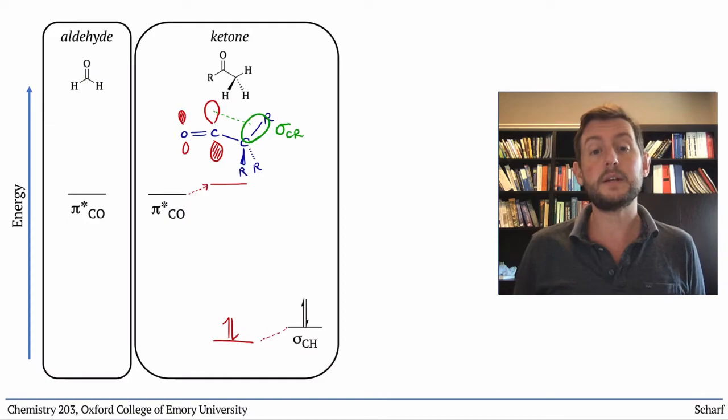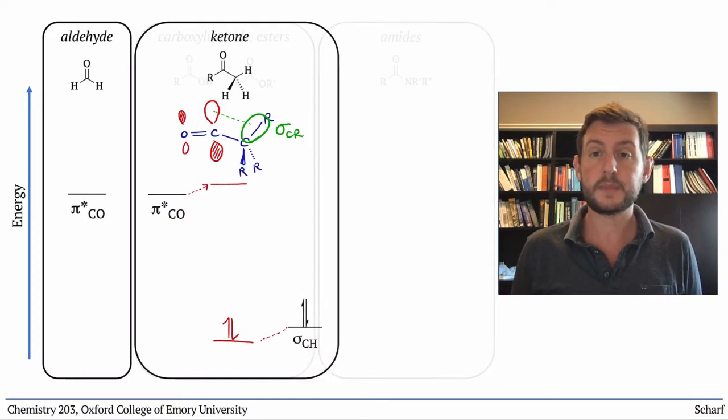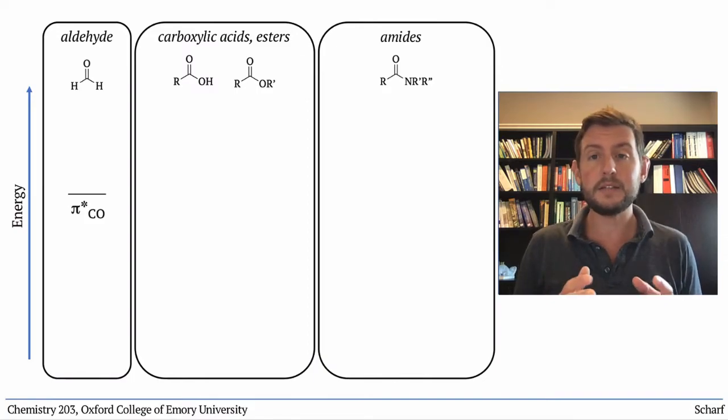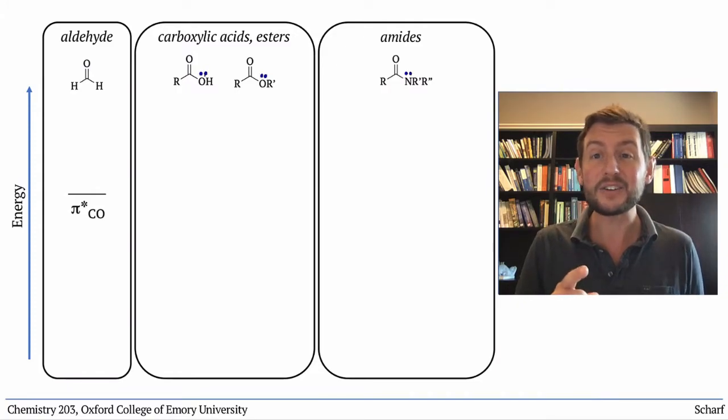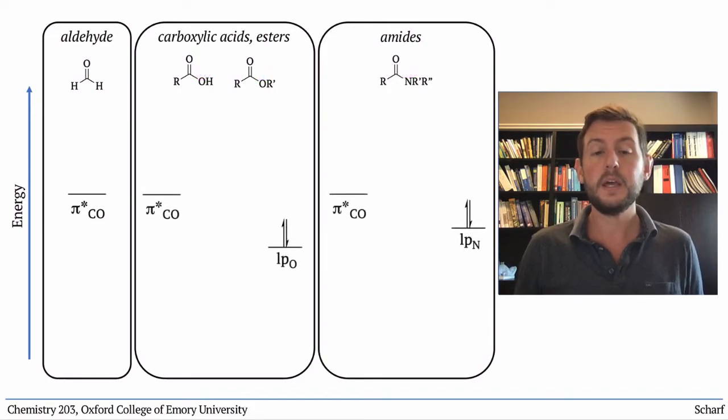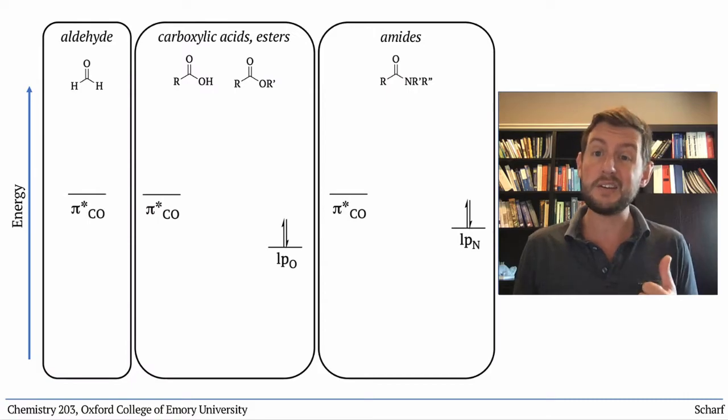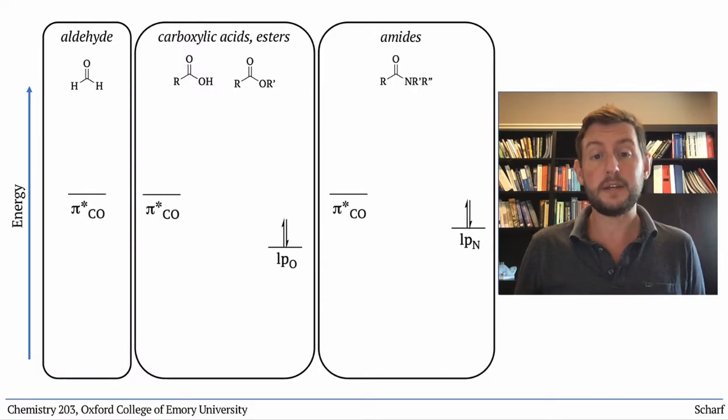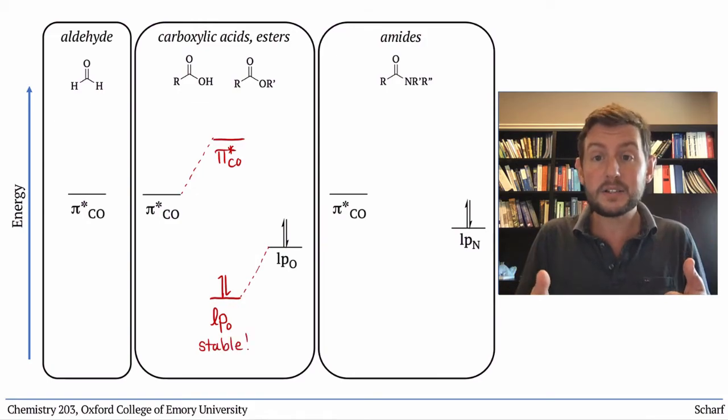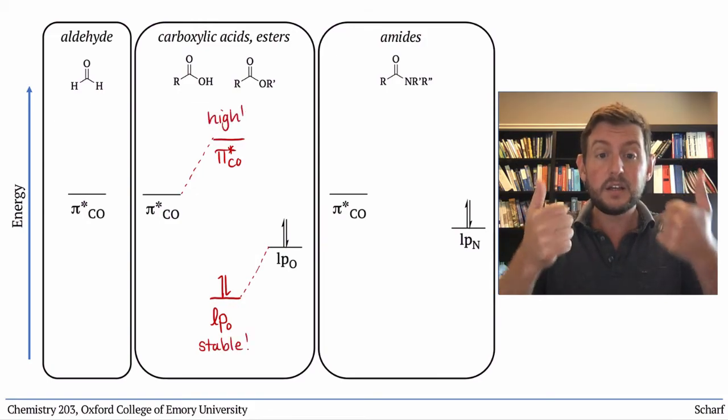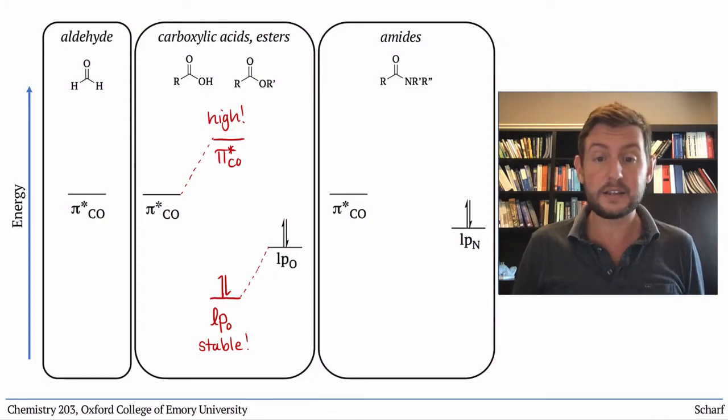A similar effect influences the electrophilicity of carboxylic acid derivatives. Let's take a look at carboxylic acids, esters, and amides altogether. Next door to their CO pi star orbitals, they have lone pairs on oxygen or nitrogen. These are much higher in energy than the sigma bonding orbitals we saw on the ketone. So they have a much more significant effect. Both the carboxylic acid and the ester orbitals overlap to make a new lower energy orbital and a new higher energy orbital. This really means that the lone pairs here are especially stable. And the pi star orbitals are quite high in energy. So carboxylic acids and esters are even less electrophilic than ketones.